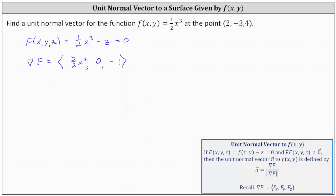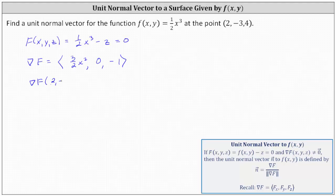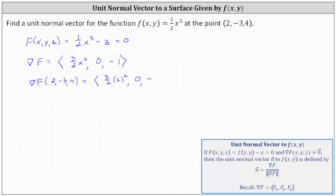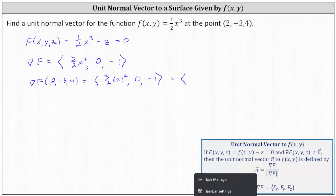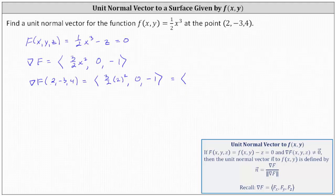Now we evaluate the gradient of F at the given point (2, -3, 4), which gives us a normal vector. The x-component is (3/2) times x squared, evaluated at x = 2, giving (3/2)(4). The y-component remains zero and the z-component remains negative one. Simplifying, (3/2)(4) = 6. So the vector (6, 0, -1) is normal to the surface at the point (2, -3, 4).